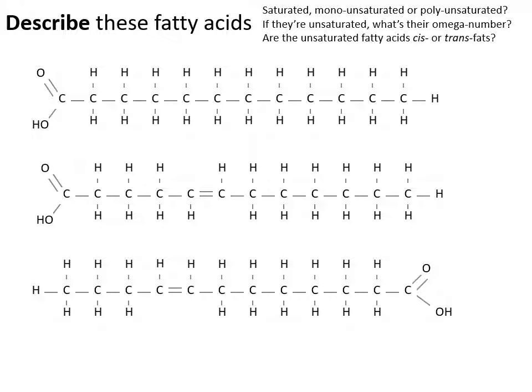We also need to consider regulating certain types of fats. Fats can be saturated (maximum number of hydrogens, no double bonds) or unsaturated (at least one double bond). Unsaturated fats can be monounsaturated (single double bond) or polyunsaturated (multiple double bonds). We also need to understand omega numbers — indicating which carbon in the chain has the double bond — and whether unsaturated fats are cis (hydrogens on same side of double bond) or trans (hydrogens on opposite sides).